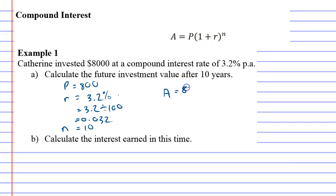So P is 8,000—I'll put an extra zero there. Then we've got 1 plus r, r being 0.032, and n is 10 to the power of 10.